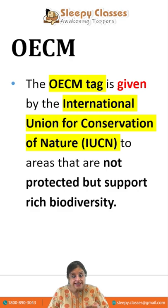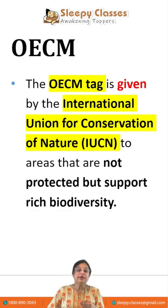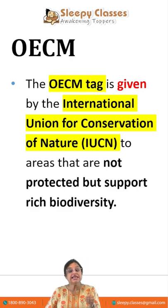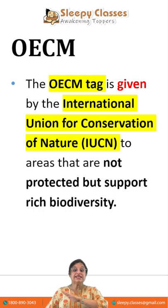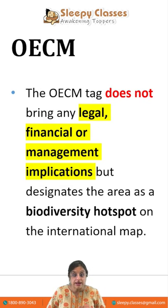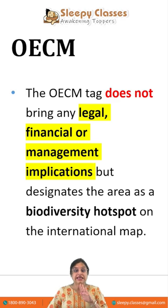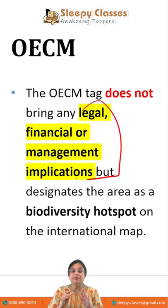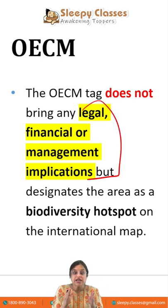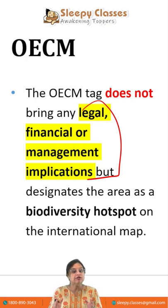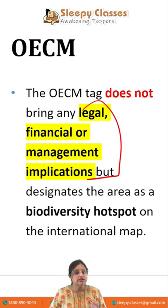OECM gives IUCN those areas where there is rich biodiversity, but these are outside of protected areas. Hence, there is a need to conserve them. This tag, with no legal, financial, or management implication, is attached — it just means that this area has a lot of biodiversity and we need to conserve it.